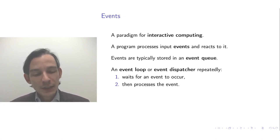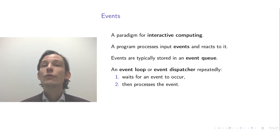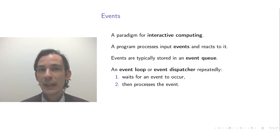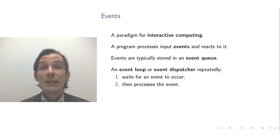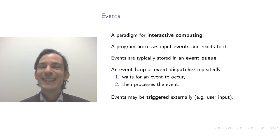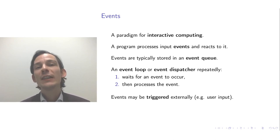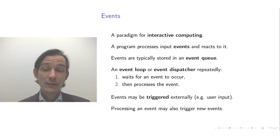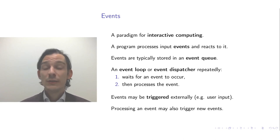It is also the case that as soon as an event from an external source — a user, for instance — has been added to the event queue, during the processing of that event, additional events are generated. You could call them internal events because they are generated by the program itself, and those are also added to the event queue. This allows you to distinguish where events come from: are they triggered externally by a mouse click or key press, or are they triggered by the processing of another event in the queue?